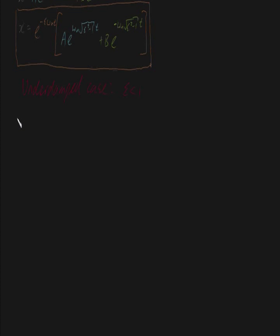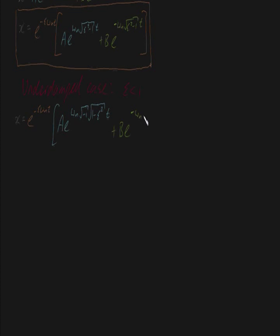Let's analyze this step by step. We have x equal to e to the minus zeta omega n t times by A e to the omega n times the square root of zeta squared minus 1 times t. If zeta is less than 1, whatever is inside the square root must be negative. A way to get around this is to take minus 1 outside of the square root sign, writing it as the square root of minus 1 times the square root of 1 minus zeta squared. Then the second term becomes B times e to the minus omega n times the square root of minus 1 times the square root of 1 minus zeta squared, all times t.